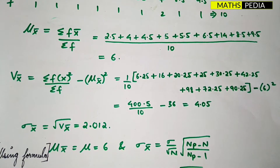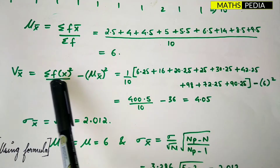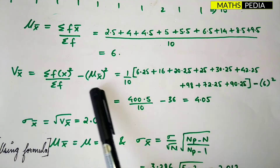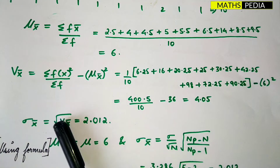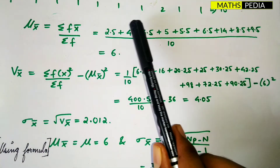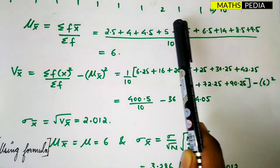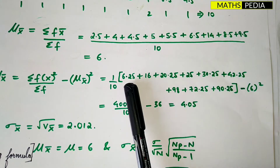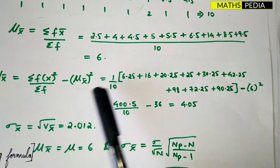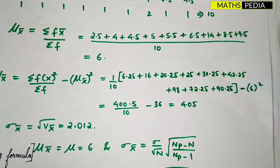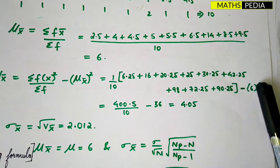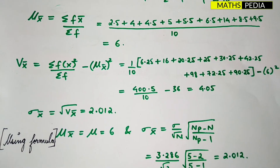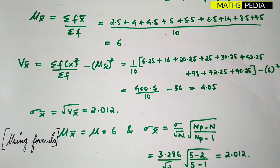Step four: find the variance of the sample. Variance equals summation of (f times x-bar squared) divided by summation of f, minus mu x-bar squared. Square all x-bar values, multiply by their frequencies — being careful that frequency 2 applies to x-bar = 7 — sum everything, divide by 10, then subtract 6 squared (36). This gives variance equals 4.05, and standard deviation sigma x-bar equals root of 4.05, approximately 2.012.